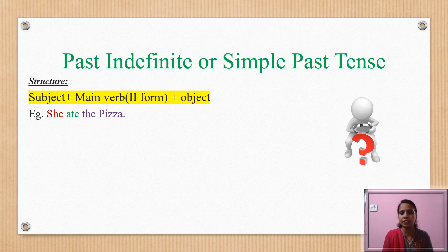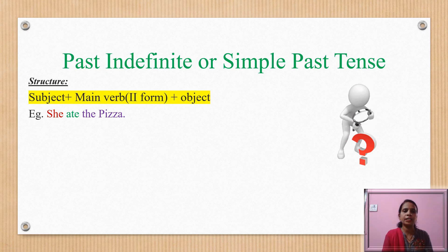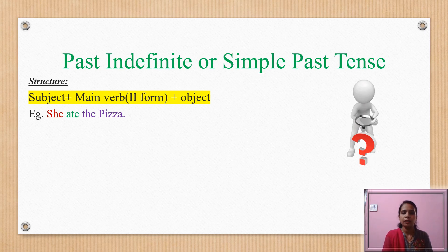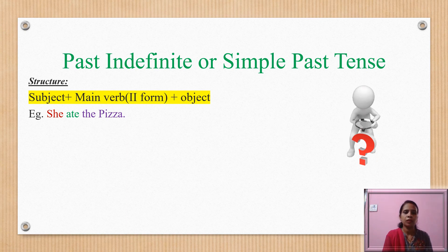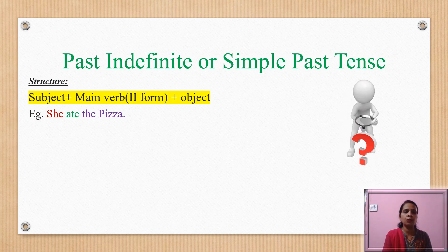Whenever you find a sentence where the main verb is in second form, you can easily identify it as simple past tense. For example, 'She ate the pizza.' 'She' is the subject — the main agent or doer of the action. 'Ate' is the main verb, which is the second form of the verb 'eat,' and 'the pizza' is the object.